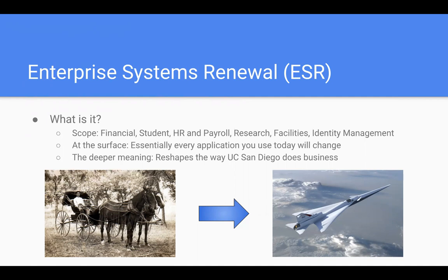There are two ways to look at this. At the surface — and I don't mean superficially, because it's important — every major application you use today is going to change. If you use IFAS, bye-bye. If you use ISIS, so long. If you use query link or have access to the data warehouse, all of those things are going to go away. People will notice first: what happened to my 3270 terminal, my green screen? That goes away too because there's no mainframe.